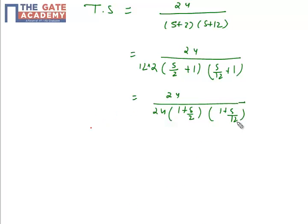After converting to time constant form, approximate analysis says that if the ratio of the dominant pole to the other pole is greater than 5,